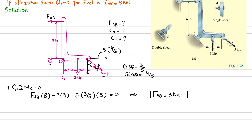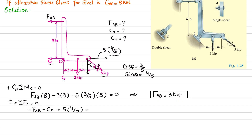Using the equation of equilibrium that the sum of all forces along the x-direction equals zero, with rightward forces positive: FAB and Cx act in the opposite direction, so both are negative. Writing −FAB − Cx + 5 × (4/5) = 0, and substituting FAB = 3: −3 − Cx + 4 = 0, giving Cx = 1 kip.